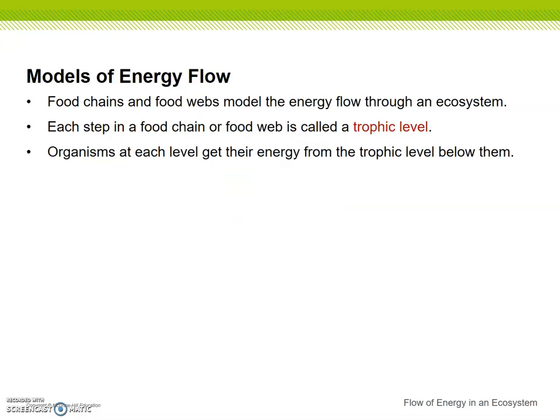Okay, models of energy flow. We have a few ways that we look at the way that energy flows through a system. We have food chains and food webs, and these are the models that we use to show how energy flows through the ecosystem. Each step in a food chain or a food web is called a trophic level. Organisms at each level get their energy from the trophic level below them. So if our example is we have grass at the lowest trophic level, and then a cow out at pasture eating the grass — the cow is getting its energy from the trophic level below it.